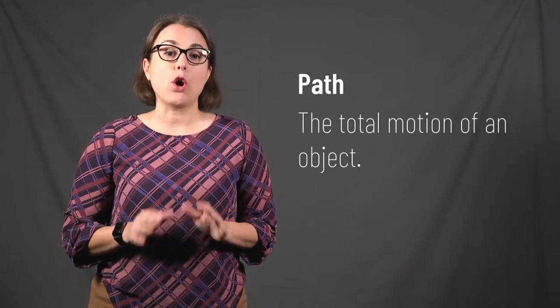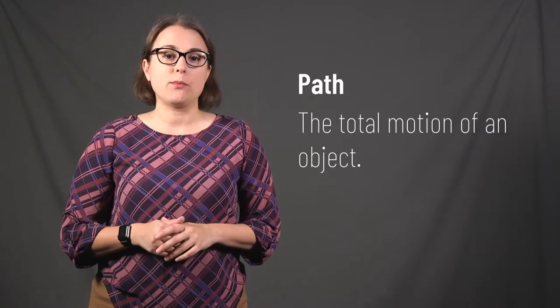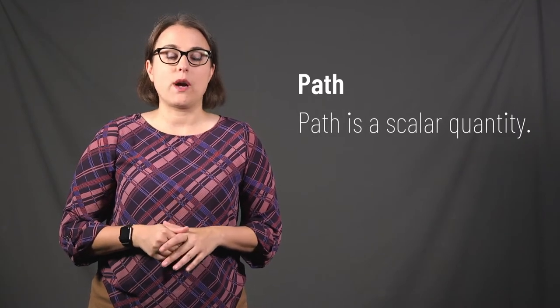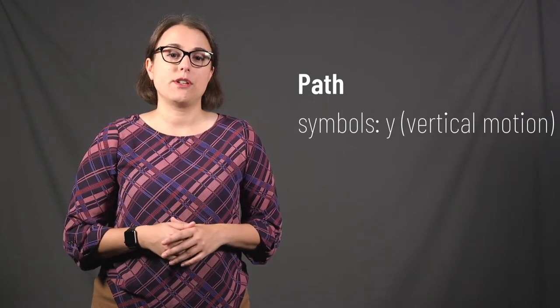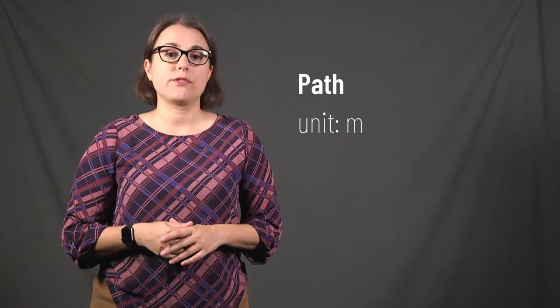The concepts of path and displacement enable us to analyze how far an object moves as it travels. Path describes the total motion of an object as it moves from one point to another. It is a scalar quantity. The symbol we use could be the lowercase letter d, the lowercase letter x, or the lowercase letter y. We typically use d when discussing distance, x for horizontal motion, and y for vertical motion. The units we use for path are meters.